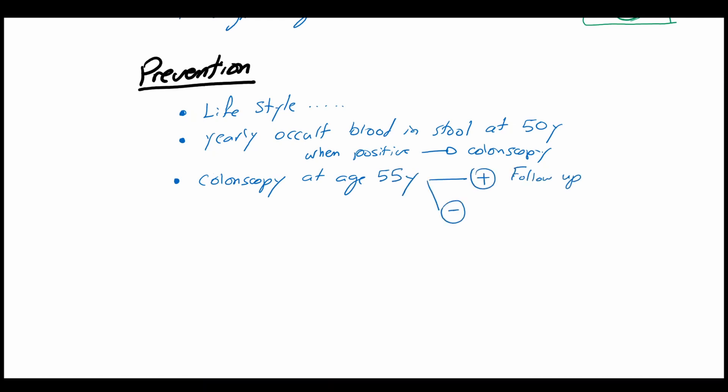Prevention of the colorectal carcinoma depends on the lifestyle modifications such as quitting smoking and alcohol consumption, healthy high-fiber diet. The second pillar of prevention is the early detection, which includes a yearly occult blood in stool at the age of 50, when positive a colonoscopy must follow, or a colonoscopy at the age of 55, when positive follow-up is recommended but when negative it must be repeated in 10 years.